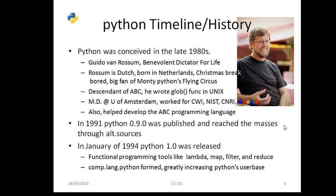In 1991, Python version 0.9.0 was published and reached the masses through alternative sourcing — whatever sources were available to run that language.